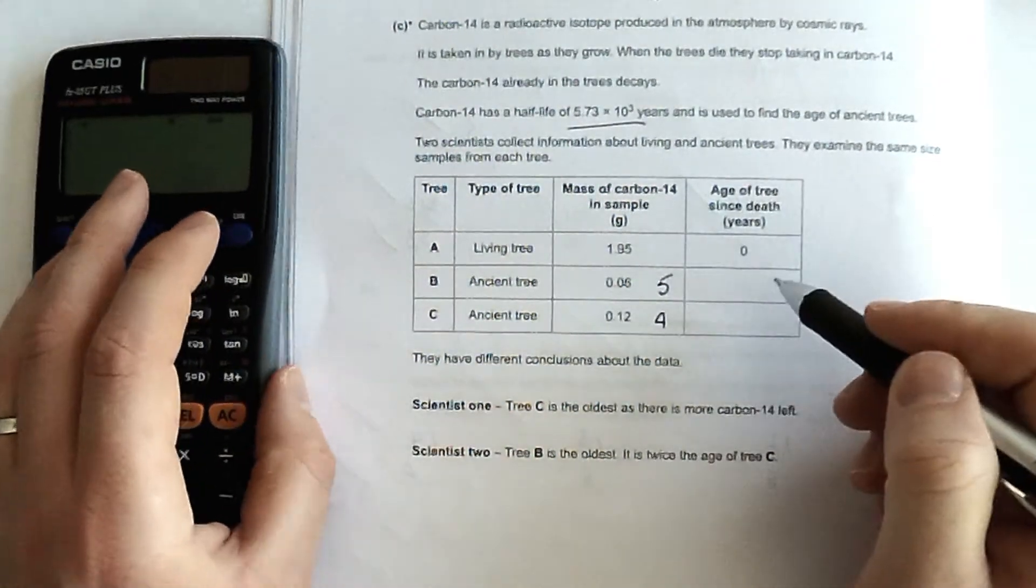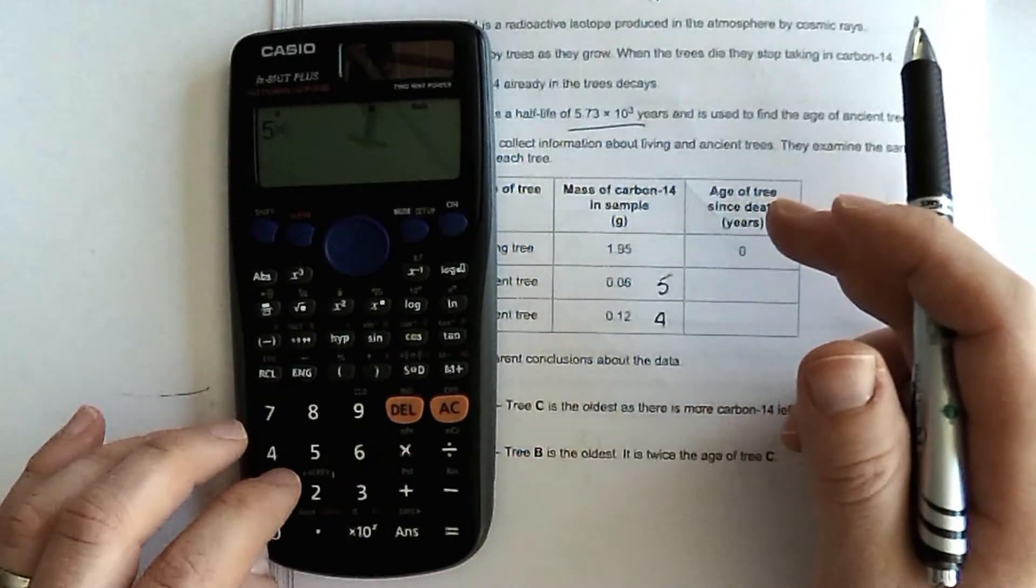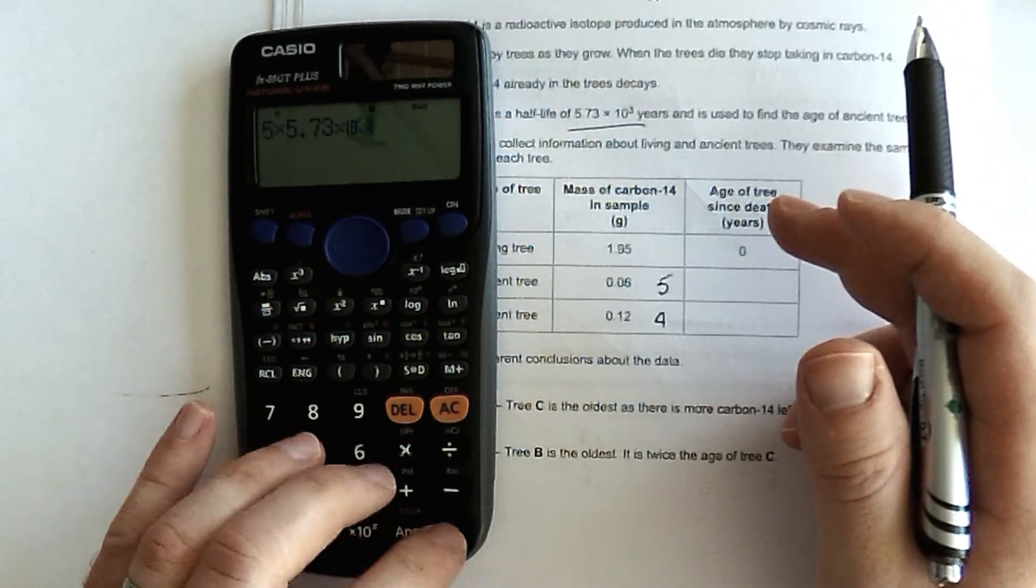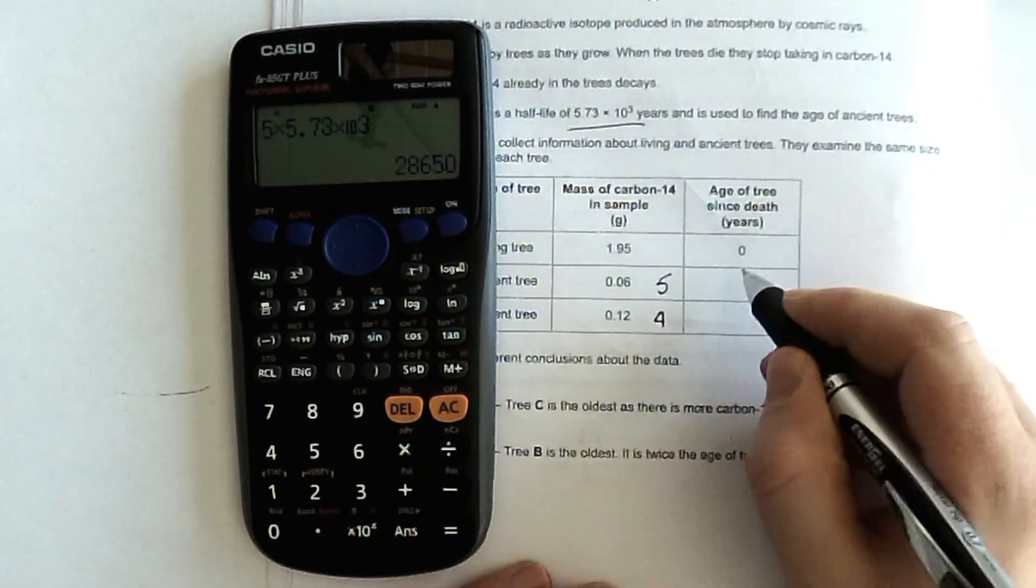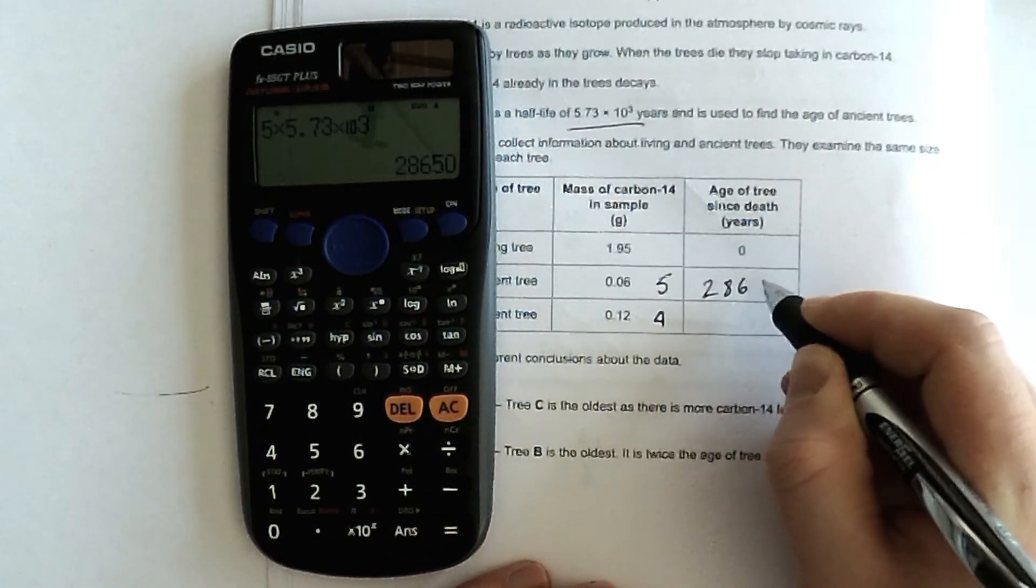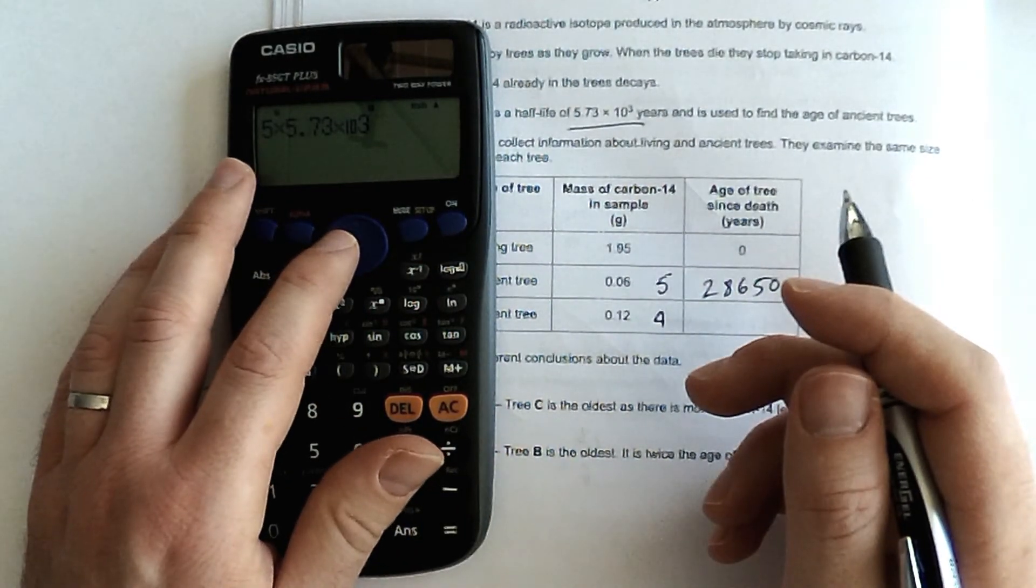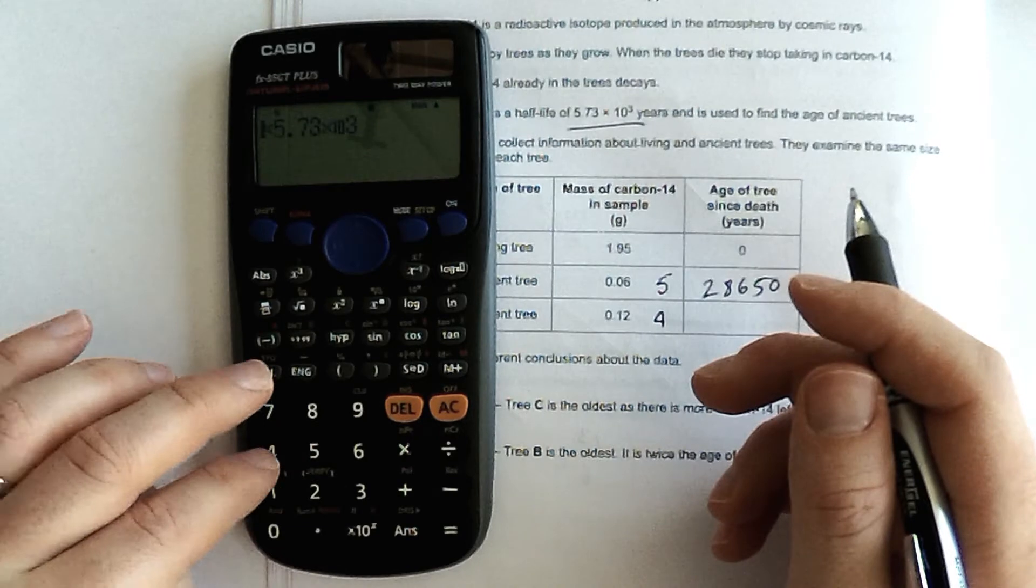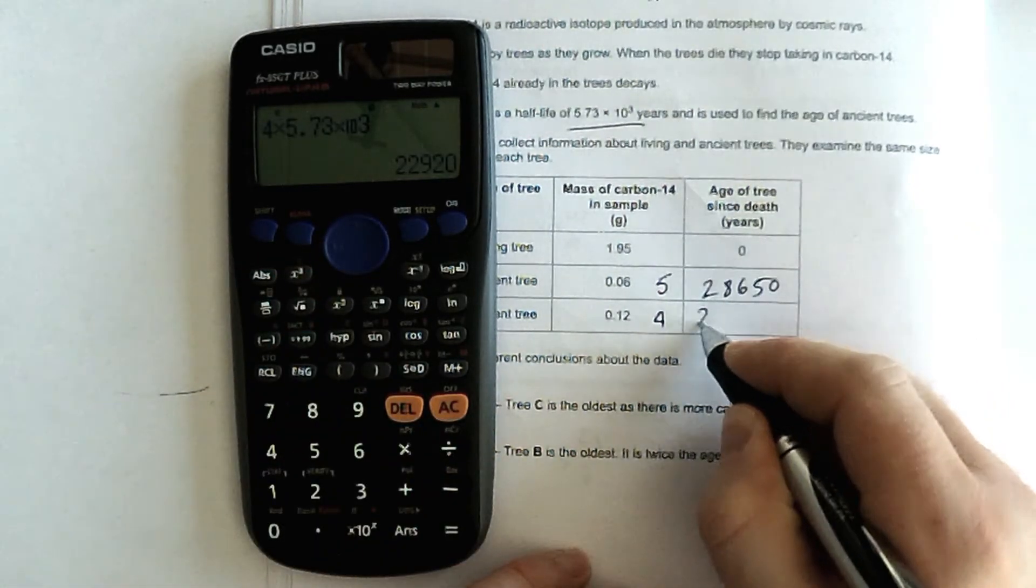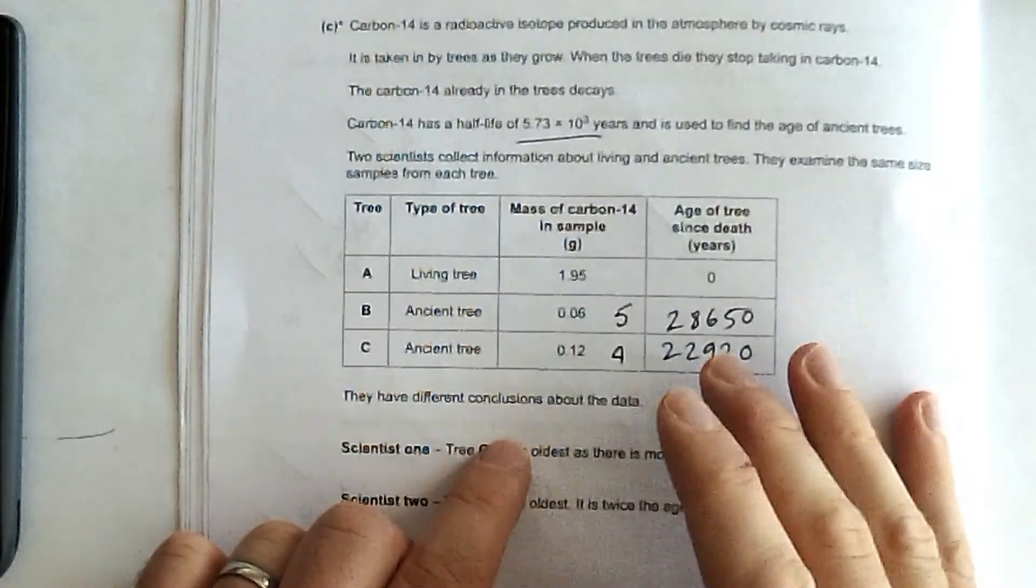Now, to work out the age, I need to do five times the half-life. Five times 5.73 times 10 to the 3 gives me 28,650. And for the next tree, I'm just going to times that by 4. So 22,920.